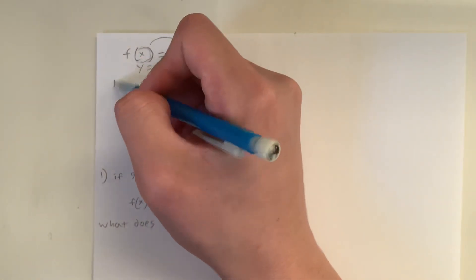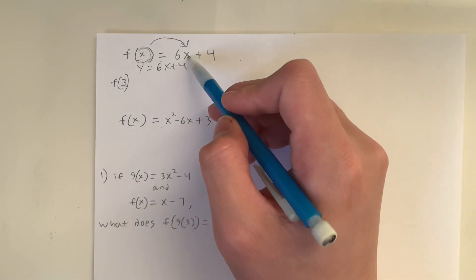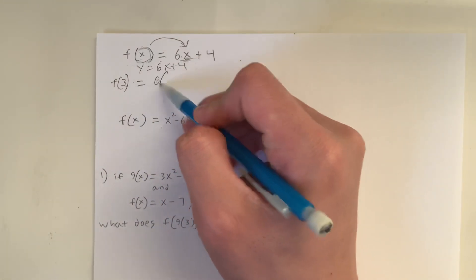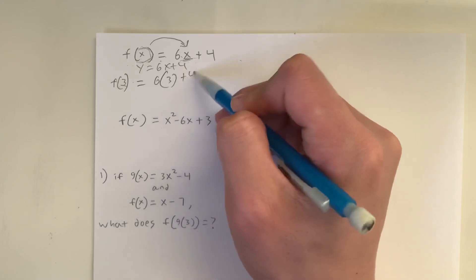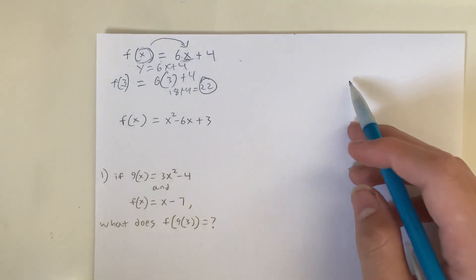So if they asked you for f(3), simply all we have to do is plug in 3 for the values of x's. So in this case, we only have one value plug in. So this f(3) is equal to 6 times 3 plus 4. 6 times 3 is 18. 18 plus 4 is 22. So it's just as simple as that.